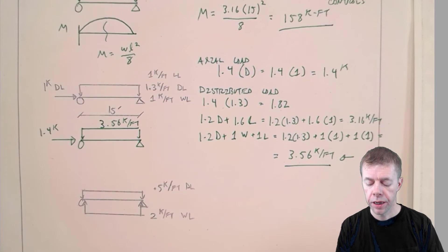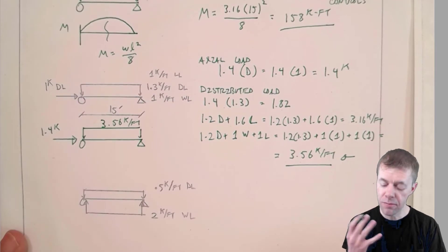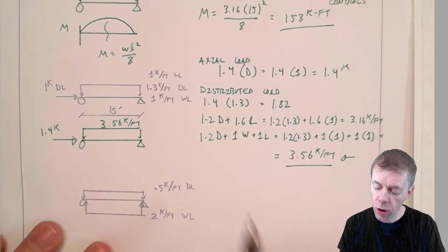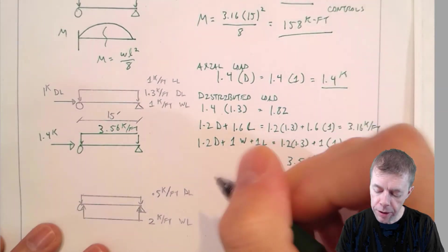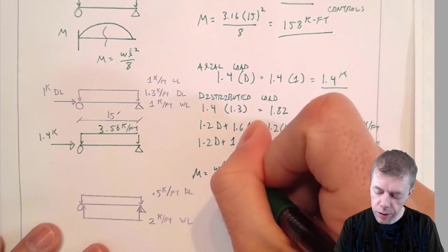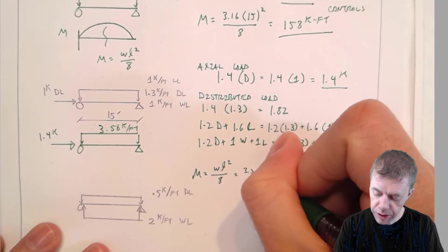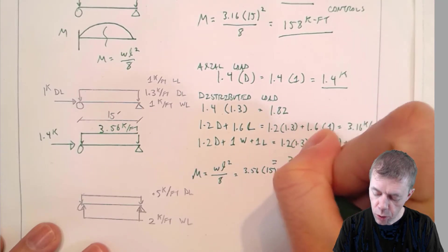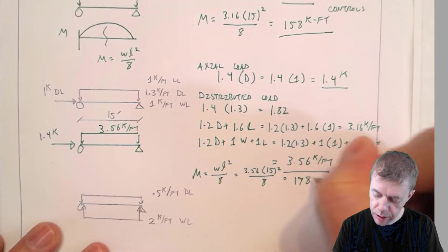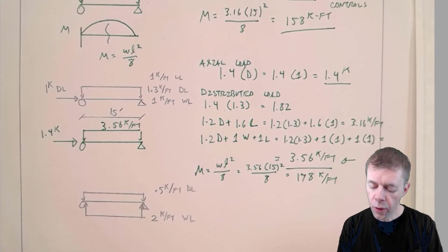3.56 kips per foot. That is my structure, that is my transformed structure with all my loads on it. This is what I've got to design for to be safe. And now I already know my axial load, I did that one, 1.4 kips. I'm going to go ahead and get my moment. M again is WL squared over 8, and that's 3.56 times 15 squared all over 8, and that's equal to 178 kip per feet. Cool, let's do another one.